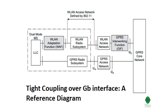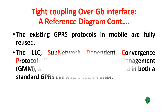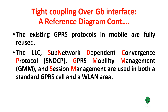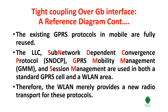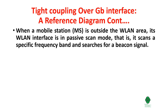Tight coupling over the GB interface: a reference diagram is shown here. The existing GPRS protocols in the mobile are fully reused. The LLC, Sub-Network Dependent Convergence Protocol (SNDCP), GPRS Mobility Management (GMM), and Session Management are used in both the standard GPRS cell and the WLAN area. Therefore, the WLAN merely provides a new radio transport for these protocols.